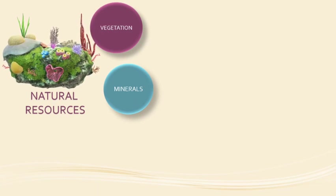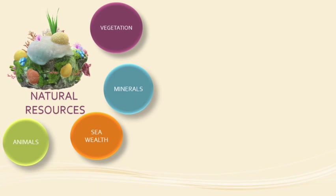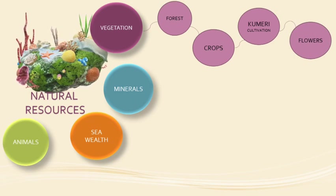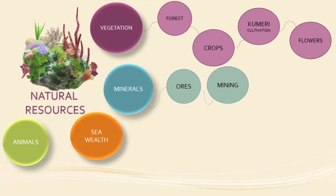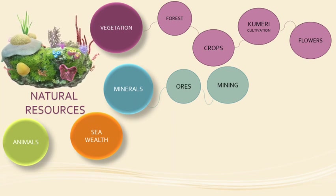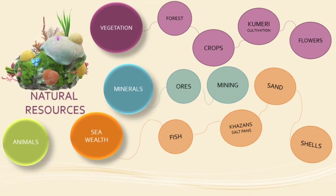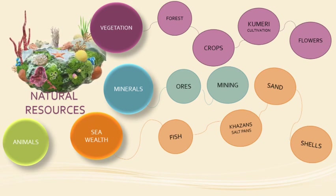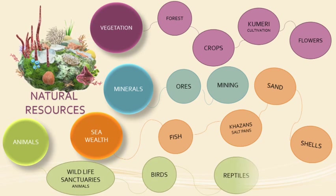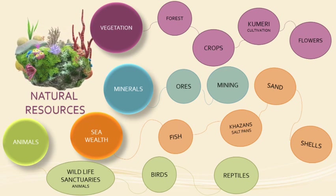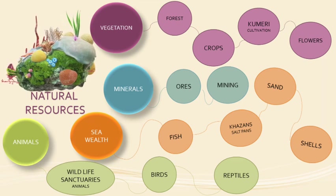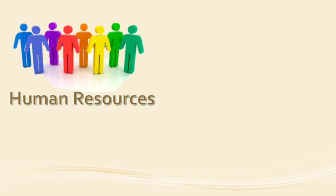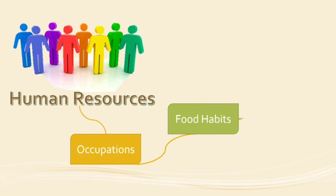In this chapter we shall learn about vegetation of Goa, minerals, sea wealth, and animals. Under vegetation we shall cover forests, crops, kumeri cultivation, and floods. Under minerals we shall learn about ores and mining. Under sea wealth we shall look at fish, khazans, sand and shells. We shall also learn about wildlife sanctuaries, birds, reptiles, and finally human resources — the occupations, food habits and shelter of the people of Goa.